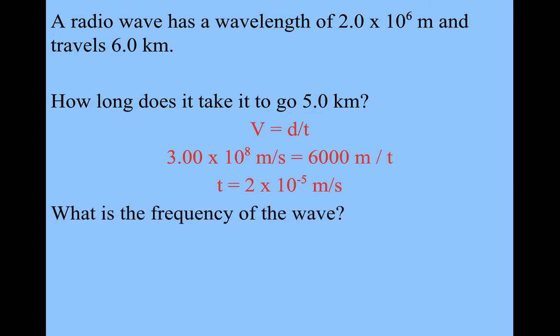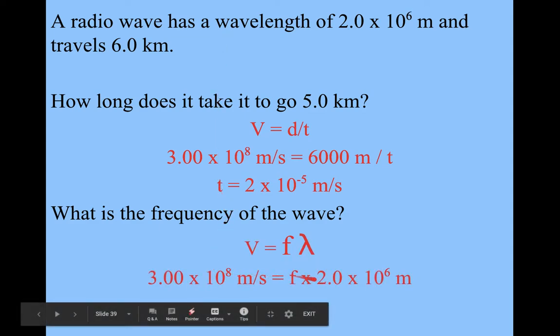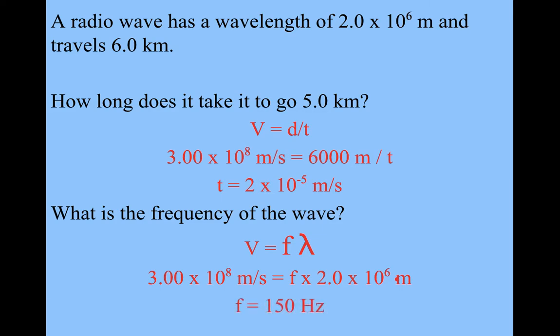What's the frequency of the wave? This is a common Regents question where it says a radio wave. If you know it's a radio wave, you need to know that it's 3 times 10 to the 8th meters per second. Velocity equals frequency times wavelength, 3 times 10 to the 8th equals frequency times 2 times 10 to the 6th. Divide 3 times 10 to the 8th by 2 times 10 to the 6th, you get 150 hertz.